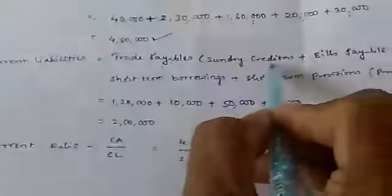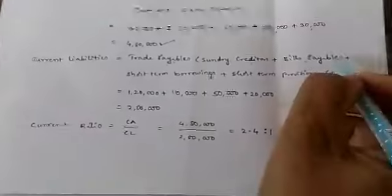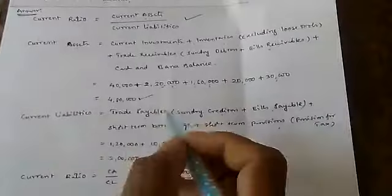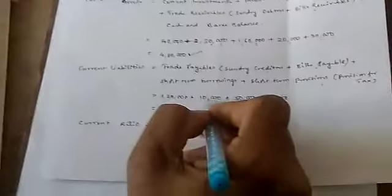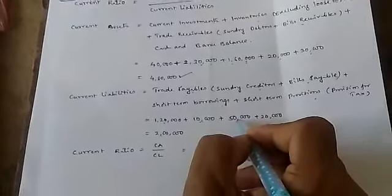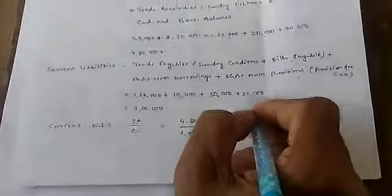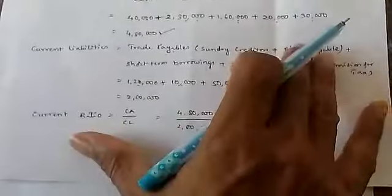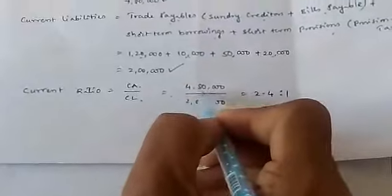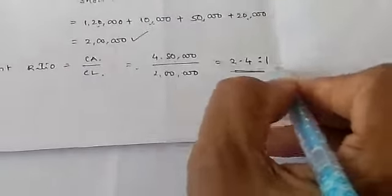For current liabilities: trade payables — sundry creditors ₹1,20,000 plus bills payable ₹10,000 equals ₹1,30,000; plus short-term borrowings ₹50,000; plus short-term provisions (provision for tax) ₹20,000. Total current liabilities = ₹2,00,000. Therefore, current ratio = ₹4,80,000 ÷ ₹2,00,000 = 2.4 : 1.